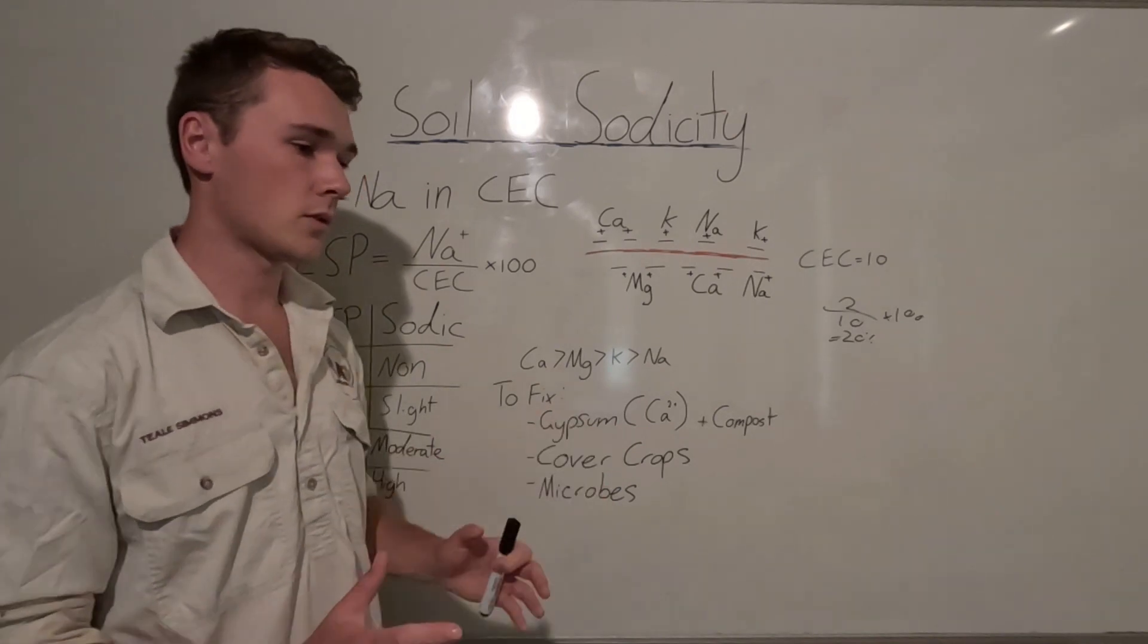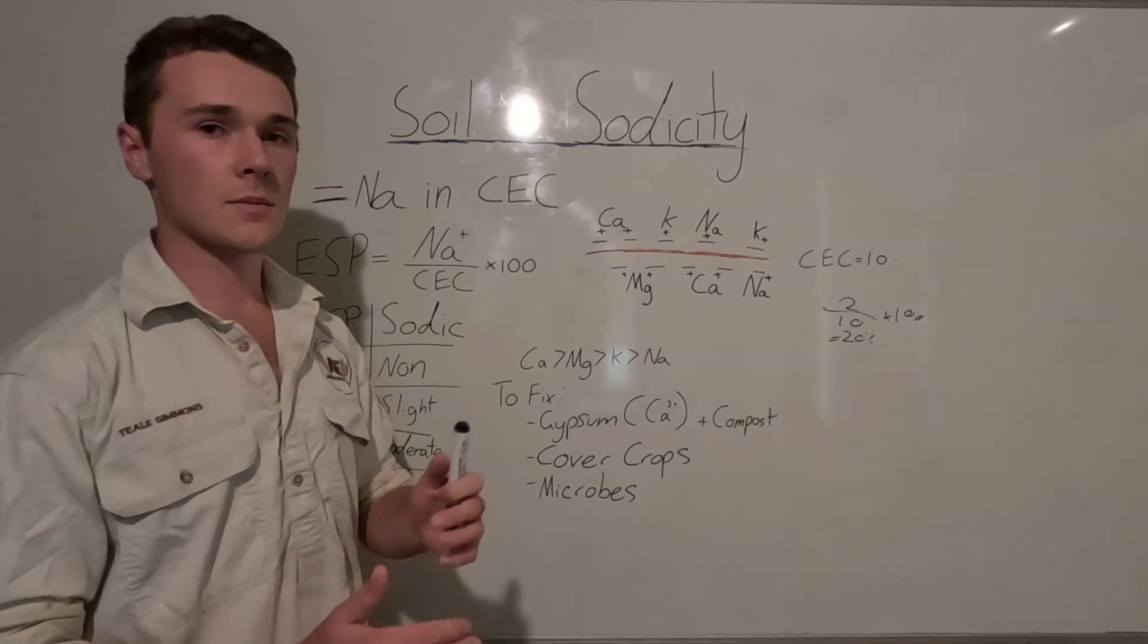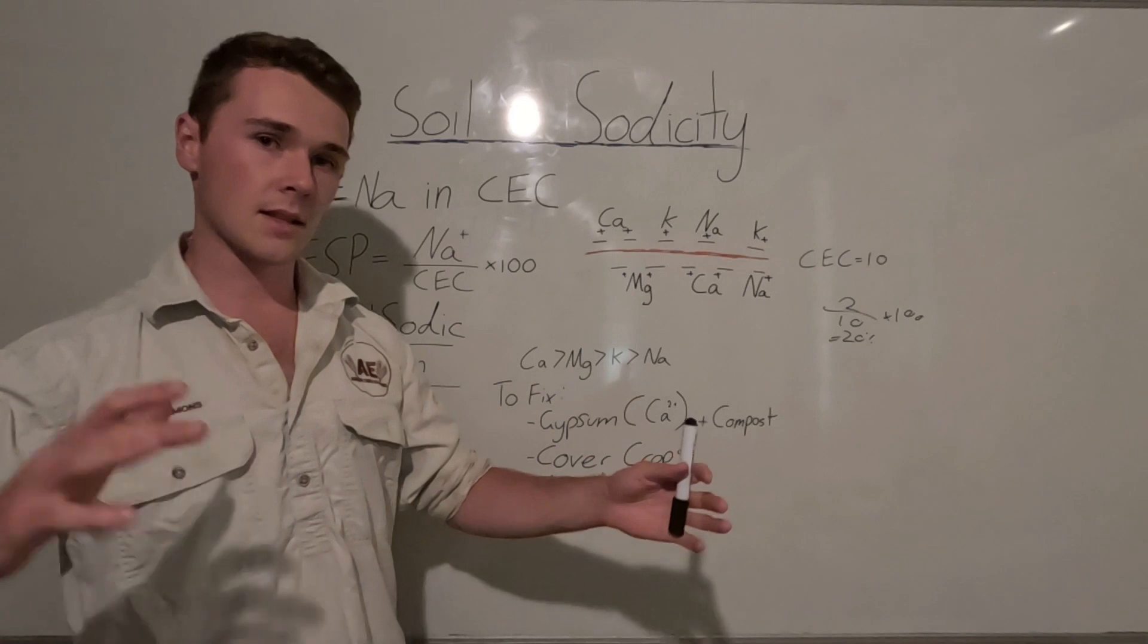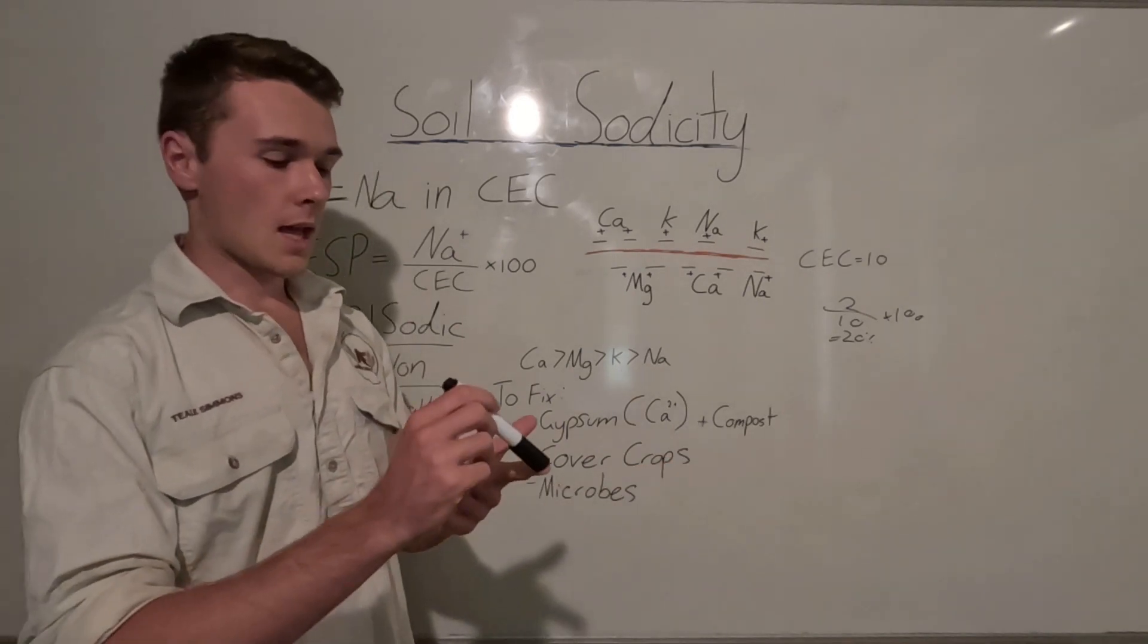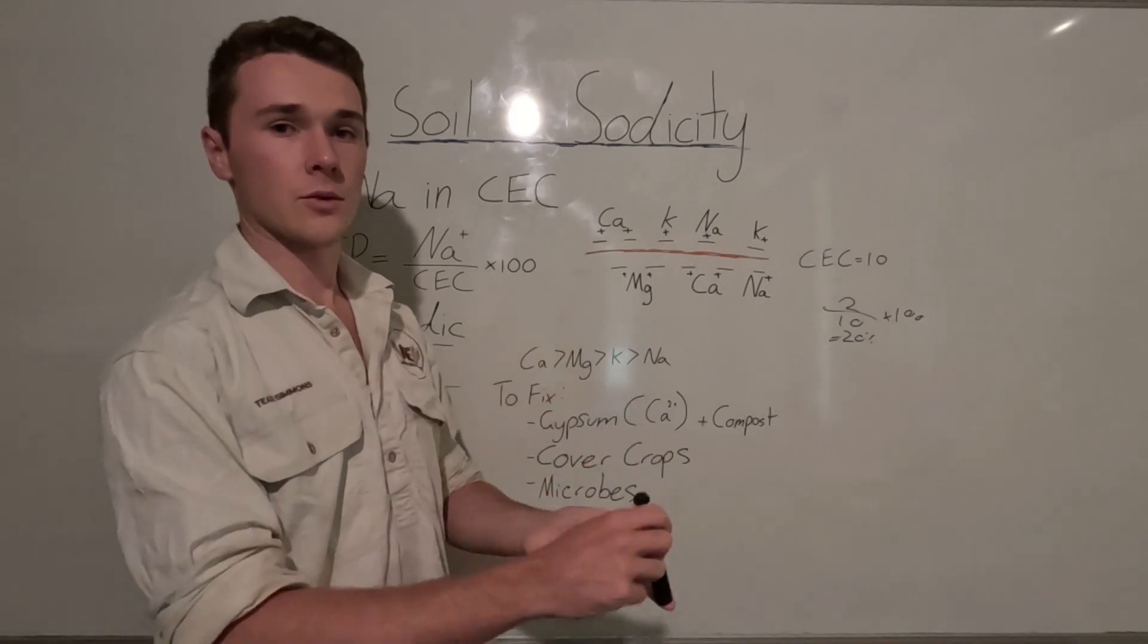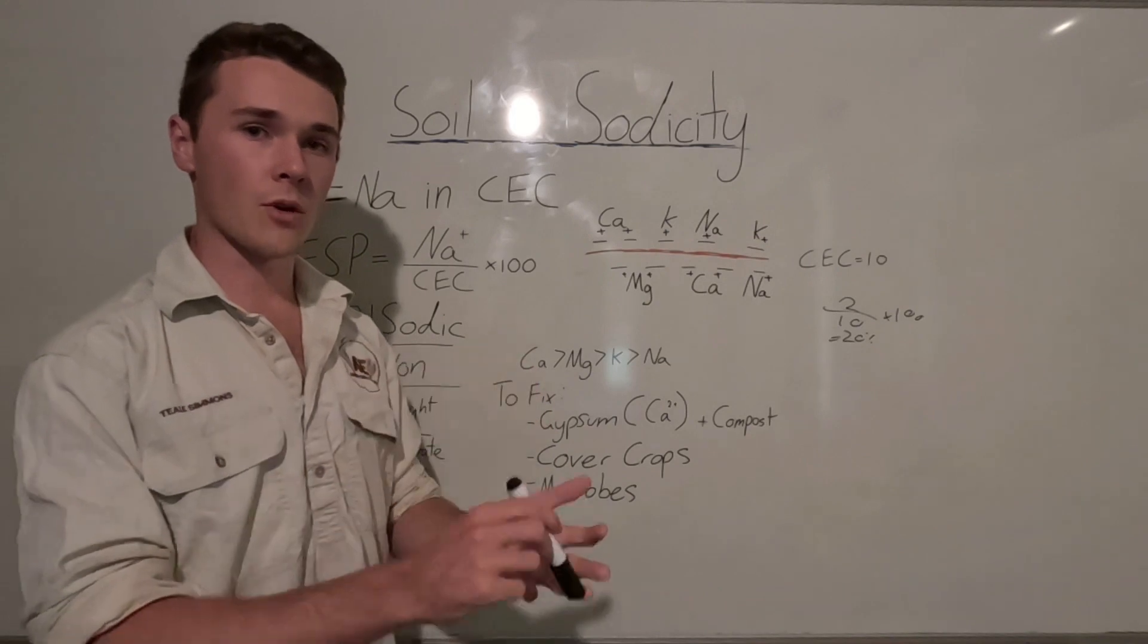So overall, sodic soils, which in Australia are called solonetz soils, they tend to be very prone to being eroded away. And so you see these big gully erosions, and they tend to be sodic. So again, problems: reduces water infiltration and water holding capacity, reduces nutrient uptake, it also makes our soils prone to erosion.